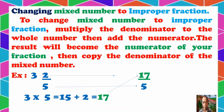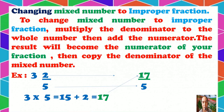Now let's have the rule for changing a mixed number to an improper fraction. To change a mixed number to an improper fraction, we multiply the denominator by the whole number and add the numerator. The result becomes the numerator of the fraction, and we copy the denominator of the mixed number.